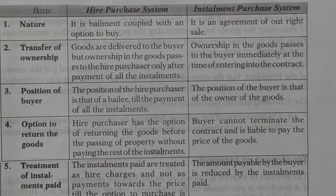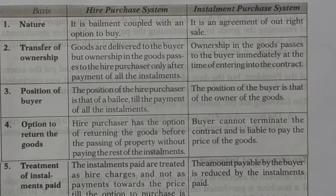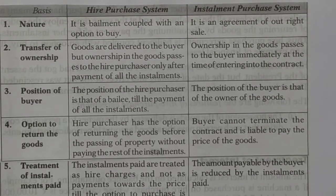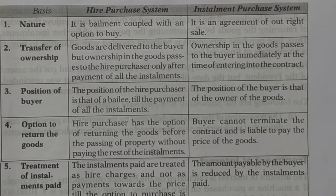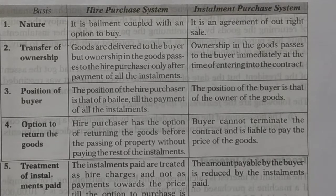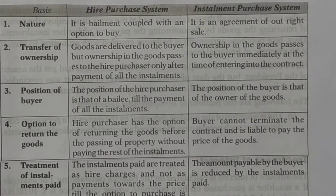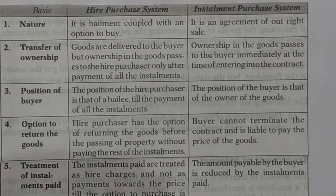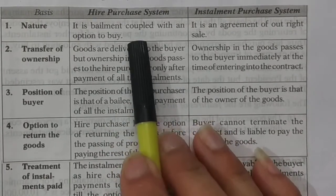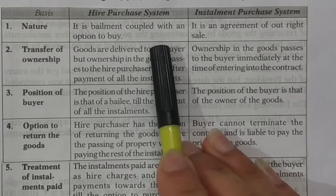Bailment means goods pass from one person to another for a specific purpose and are returned after the purpose is fulfilled. For example, giving fabric to a tailor to stitch, giving a book to a friend to read, or leaving a pet dog with a neighbor while on holiday — all are bailments. Hire purchase has the nature of bailment but also includes an option to purchase: the buyer can pay all installments and take ownership of the goods.